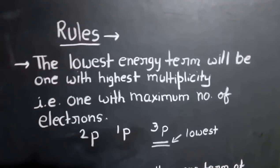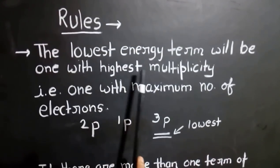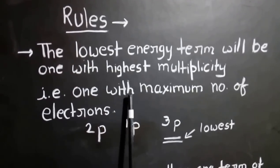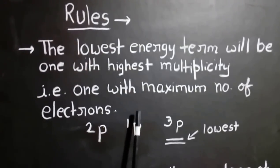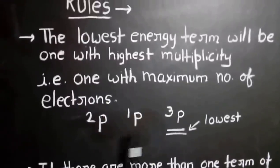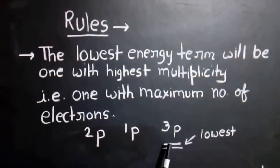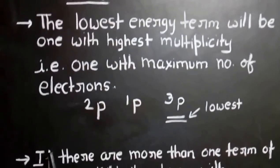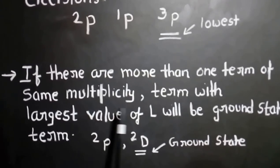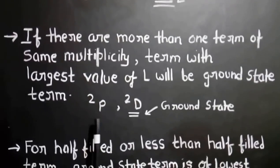There are certain rules that determine the ground state term. The first rule is that the lowest energy term is the one with the highest multiplicity, meaning it has the maximum number of electrons of the same spin. For example, given states 2P, 1P, and 3P, the state 3P has the highest multiplicity and is therefore the ground state. The second rule is that if there are more than one term of the same multiplicity, the term with the largest value of L is the ground state term. For example, given 2P and 2D — both with multiplicity 2 — D has L=2 versus P with L=1, so 2D is the ground state.